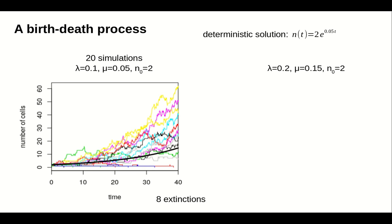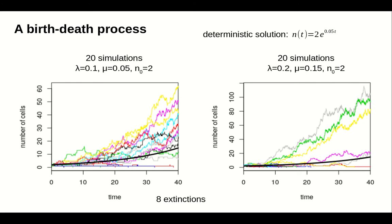The stochastic simulation, however, is significantly affected by increasing both the birth and death rate. The variability among the simulations increases, and the number of extinctions jumps to 14. Although the birth rate is still 0.05 larger than the death rate, the fact that the ratio between birth and death rate dropped increases the likelihood of an extinction.